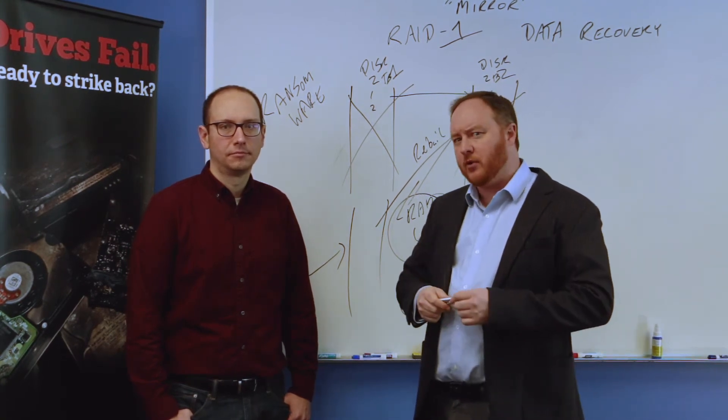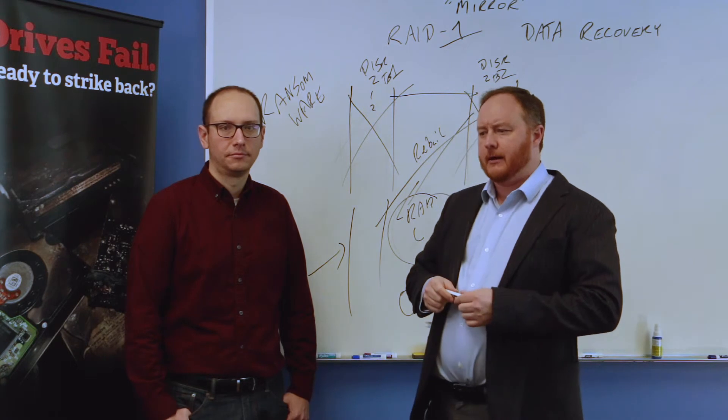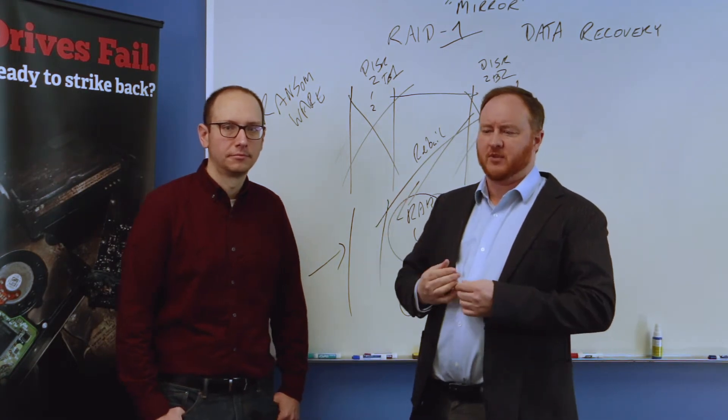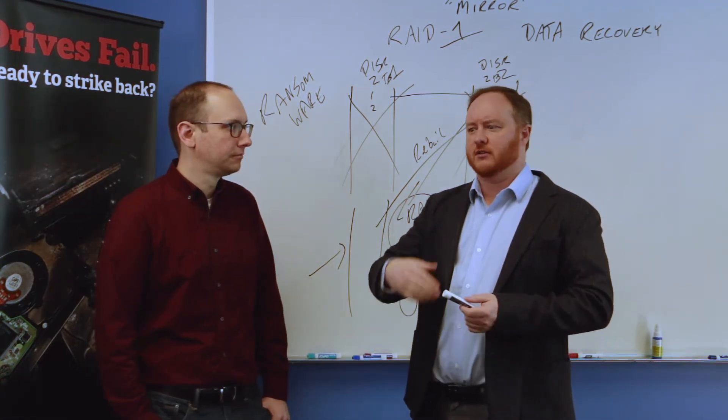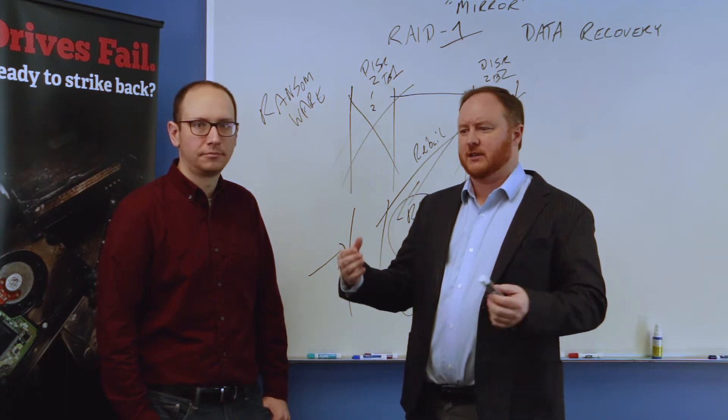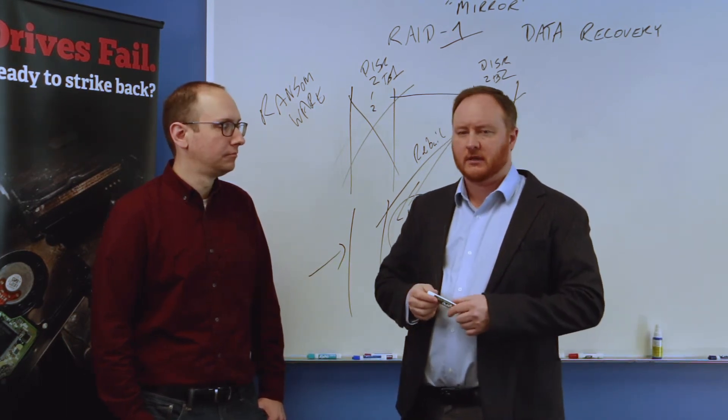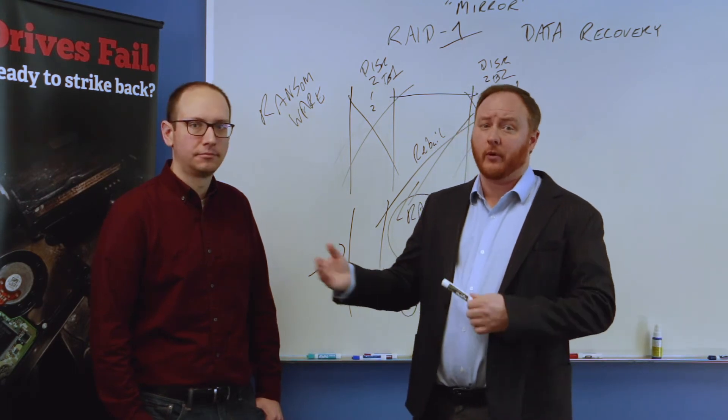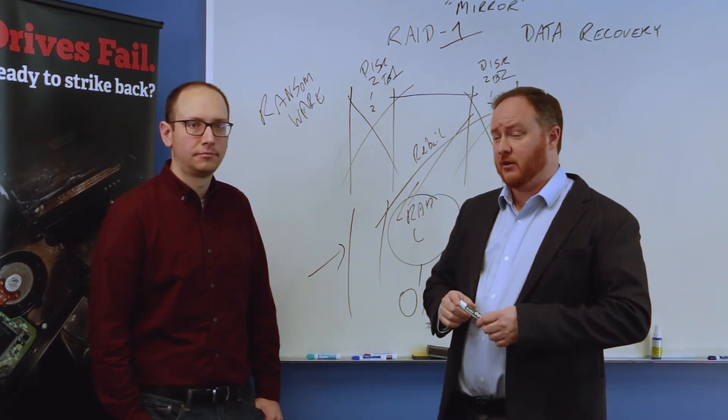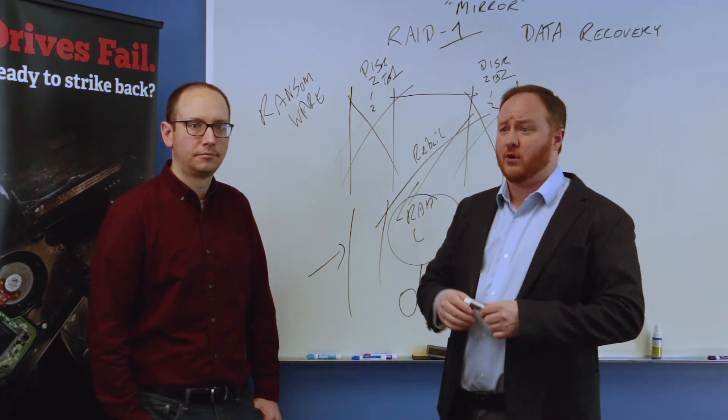So kind of a common price point for a two-drive RAID 1 with the human analysis and optimizing and quality assurance and all these things, I would say a normal price is $2,000 to $3,000. Certainly it could be less, it could be more.